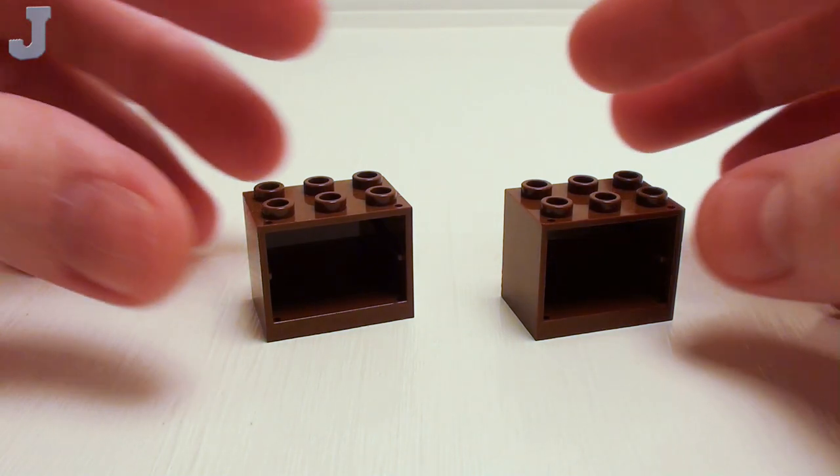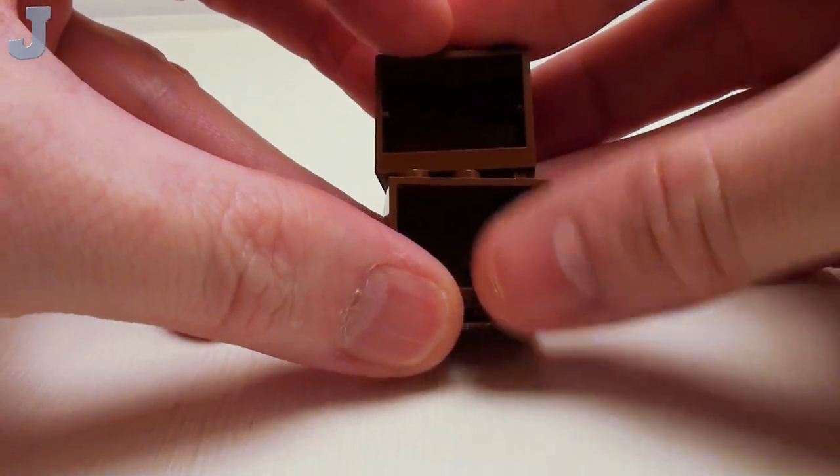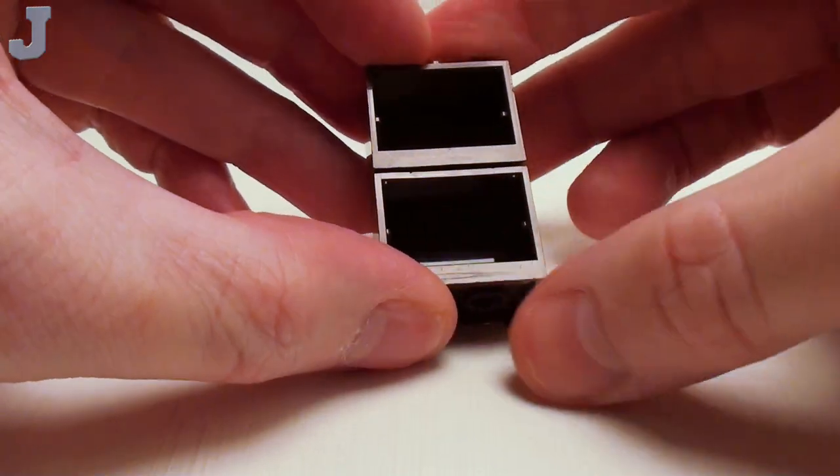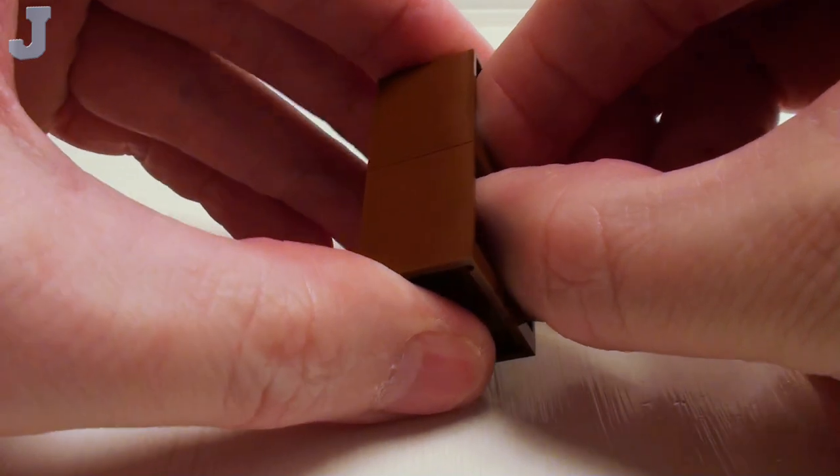For a chest of drawers, take a set of 2x3x2 cupboards. We're going to place these on top of one another. Now we're going to need to be extra careful with these, because this is reddish-brown. And we're going to slowly push those together.